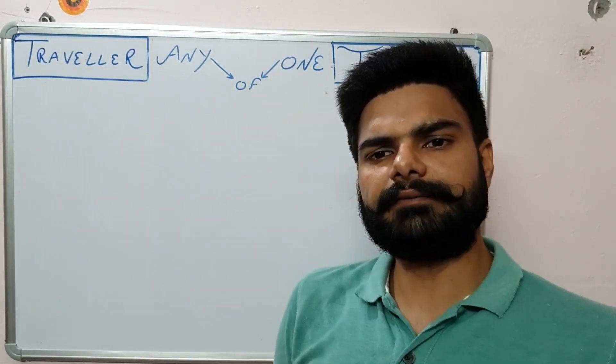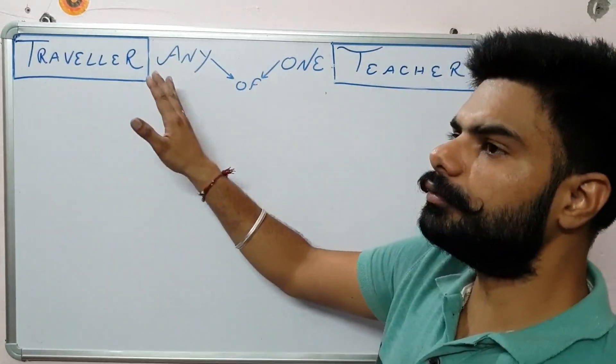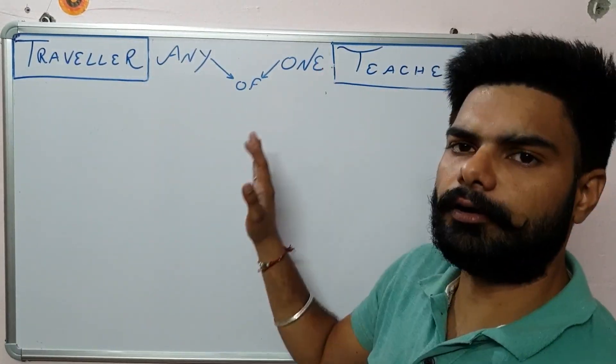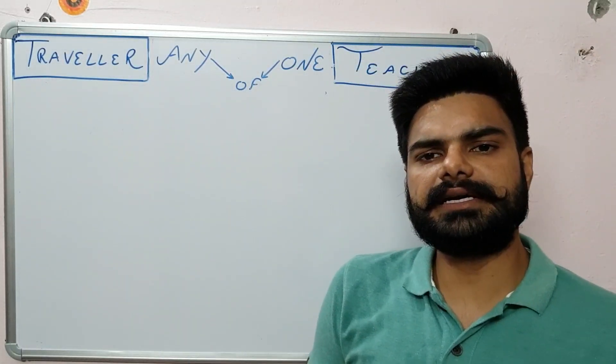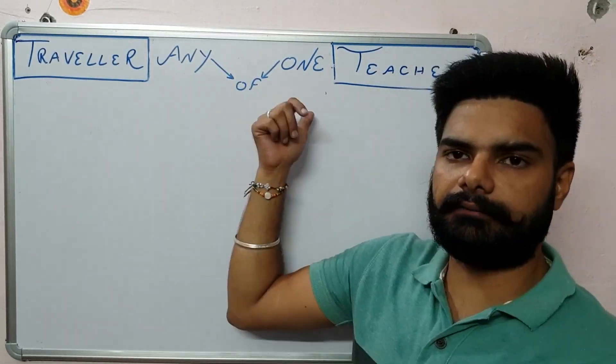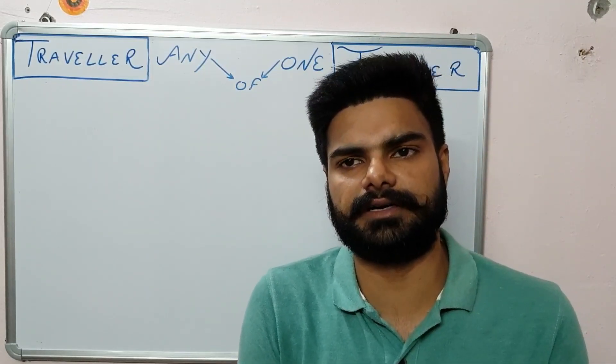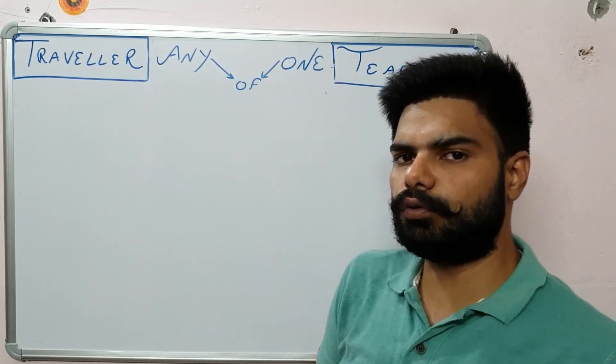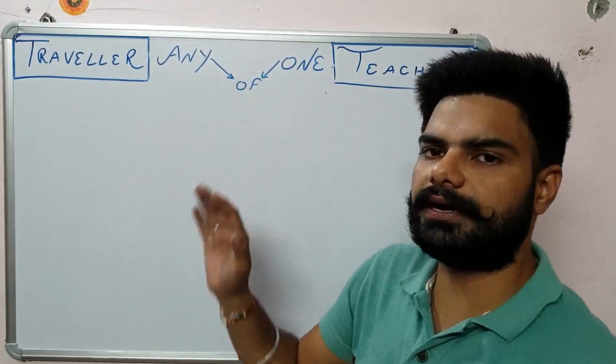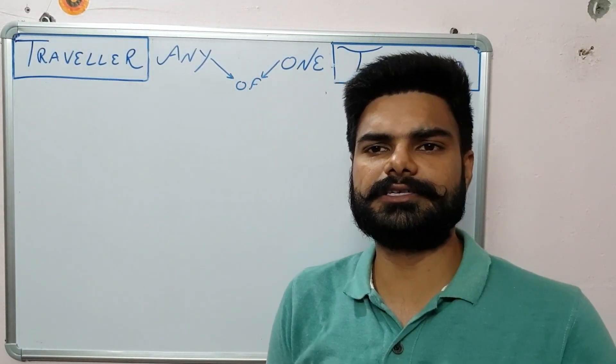The English topic which we are going to talk about today is how we use any of and one of. There are two words in English language, any of and one of. How we use them, what exactly the verb should be placed after these words, and what is the basic rule of any of and one of in English language. So let's start our today's topic.